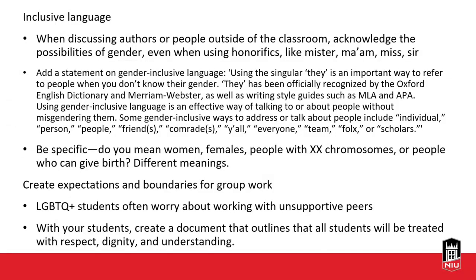We also want to make sure we're taking care of LGBTQ+ students in class. Creating expectations and boundaries for group work is really important. LGBTQ+ students often feel uncomfortable or worried about working in small groups with people they don't necessarily know well or trust. Make sure all of your students know what the expectation is for group work — how we're going to treat others, making sure we know each other's names and pronouns, and how we're going to work together. If we can't work together, then we need to revisit what we're doing.